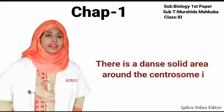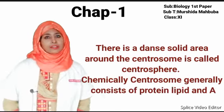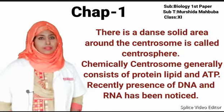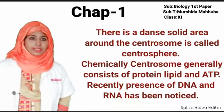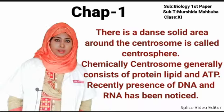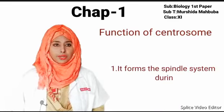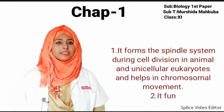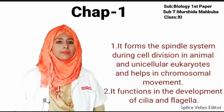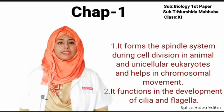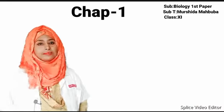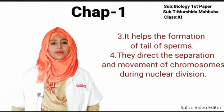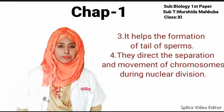Centrosphere: There is a dense solid area around the centrosome called the centrosphere. Chemically, the centrosome generally consists of protein, lipid, and ATP. Recently, the presence of DNA and RNA has also been noticed. Functions of centrioles: They form the spindle system during cell division in animal and unicellular eukaryotes. They help in chromosomal movement, the development of cilia and flagella, and the formation of the tail of sperms. They direct the separation and movement of chromosomes during cell division.